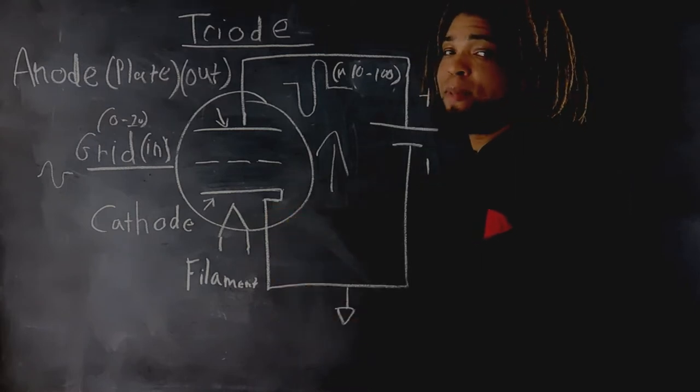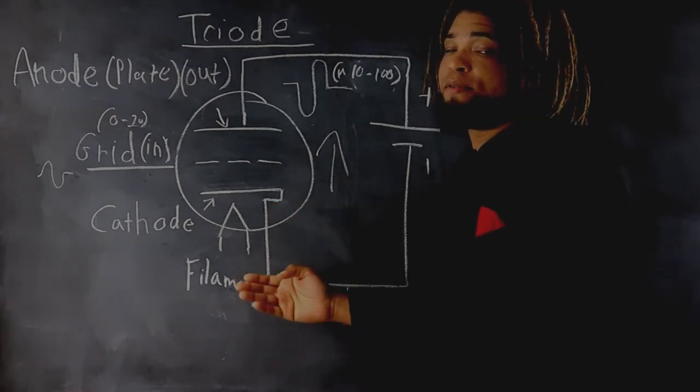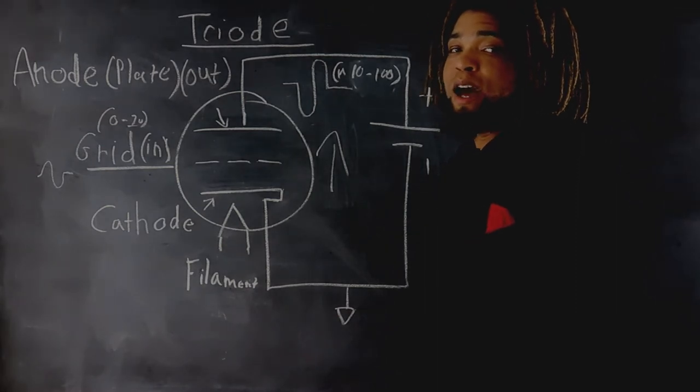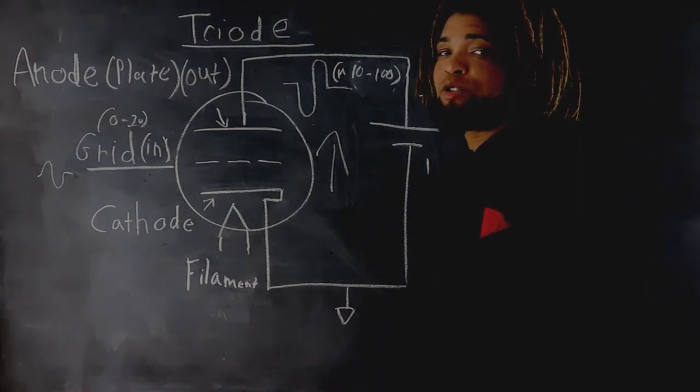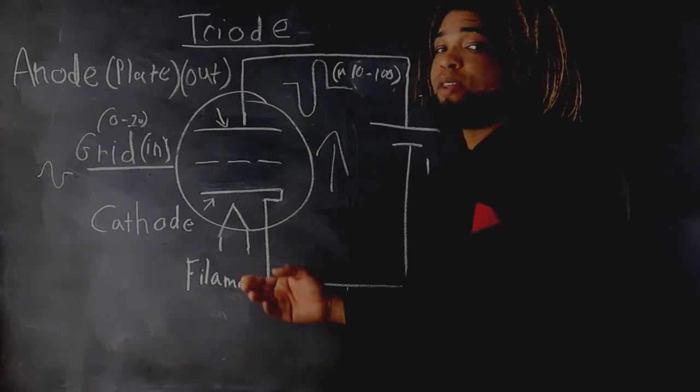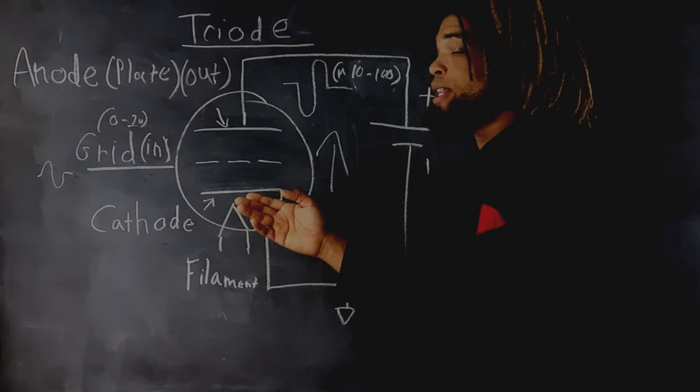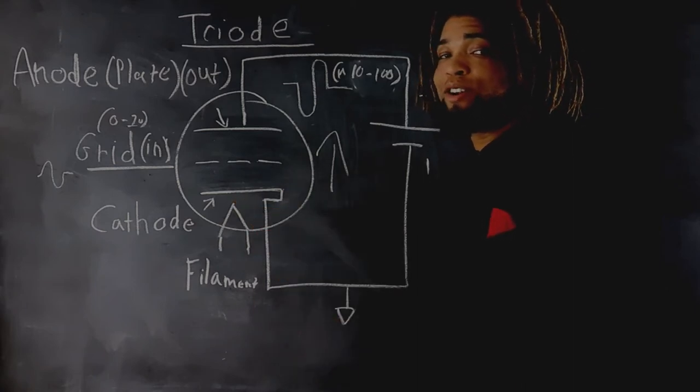The cathode is a metal sleeve placed on top of the filament. The filament is how the thermionic energy is created. This is where the light and heat come from. This heat creates electrons. These electrons are negatively charged.